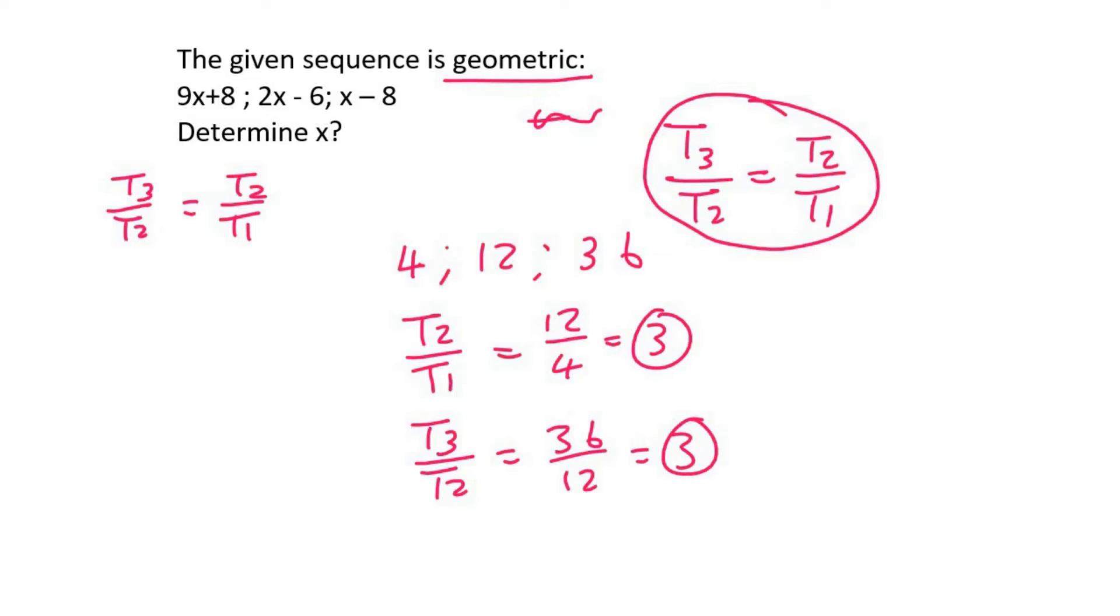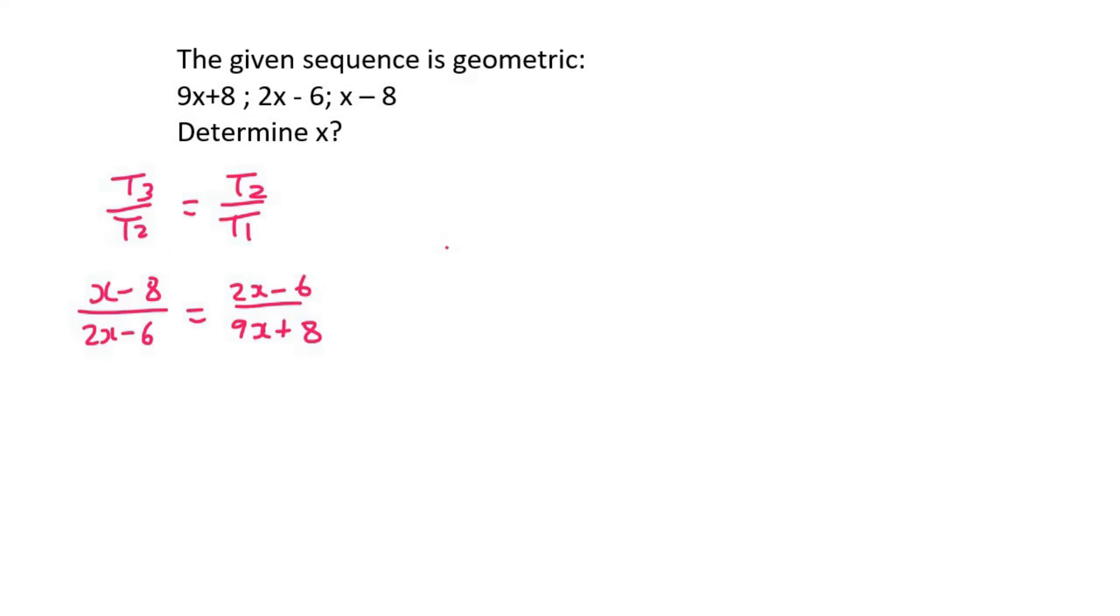So now what we can say is X minus 8 over 2X minus 6 equals 2X minus 6 over 9X plus 8. Now what we do is we cross multiply.